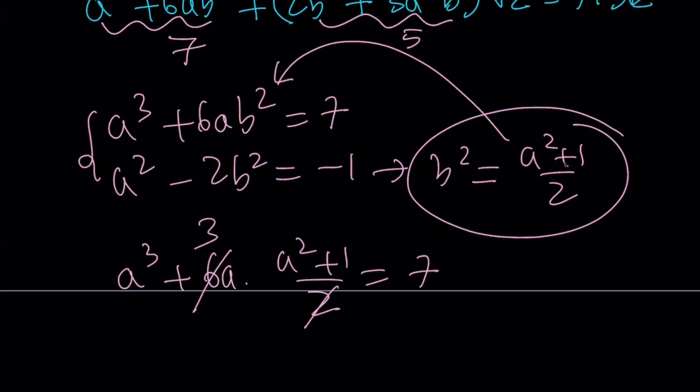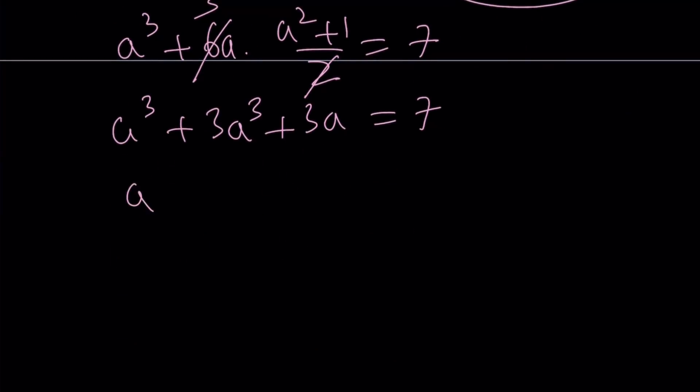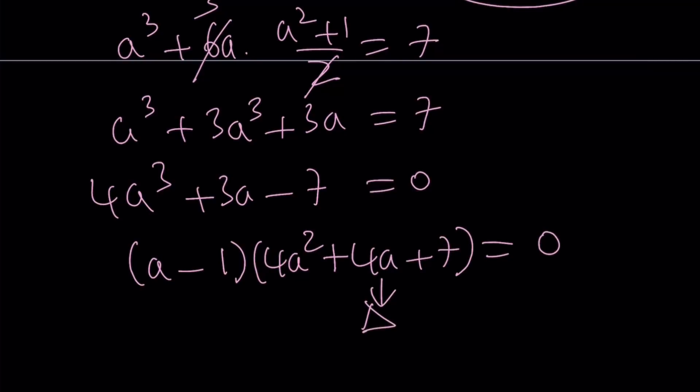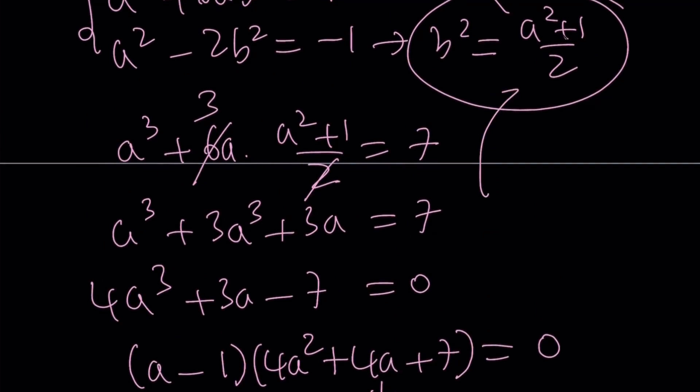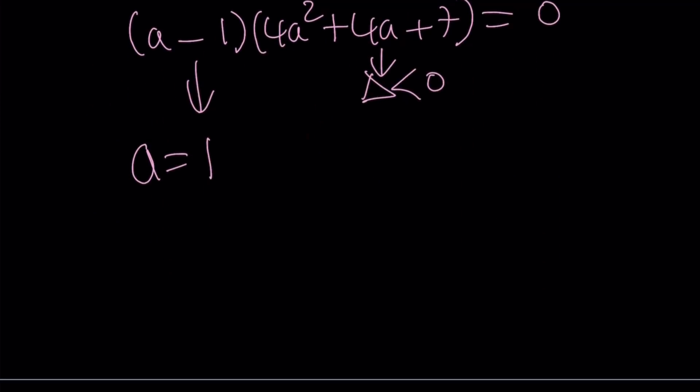2 goes into 6 three times. This gives me a cubed plus 3a cubed plus 3a equals 7. If you add like terms you get 4a cubed plus 3a minus 7 equals 0. Obviously in this case a equals 1 is a solution because the sum of the coefficients is 0. And if you factor this equation, you can basically write this equation as a minus 1 times 4a squared plus 4a plus 7. This equation has no real solution, so I'm going to have to go with this one which tells me a equals 1. And then if you plug in a equals 1 here you're going to get that b is also 1.